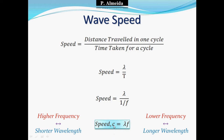If a wave travels at constant speed — like an electromagnetic wave — changing the wavelength changes the frequency. A higher frequency means higher energy and shorter wavelength; a lower frequency means lower energy and longer wavelength. The energy relationship comes from E equals Planck's constant times frequency. In the electromagnetic spectrum, gamma rays have the shortest wavelength and highest energy, followed by X-rays, ultraviolet, visible light, infrared, microwaves, and radio waves, which have the lowest frequency, lowest energy, and longest wavelength.